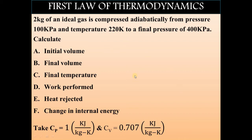Now we will analyze this question. A 2 kg mass of gas is being compressed adiabatically, which means the gas undergoes adiabatic compression. Due to this, the volume of the gas will decrease, the pressure will increase, the temperature will increase, and the quantity of heat will increase. The important point is that the generated heat will not be rejected to the surroundings. In simple words, there will be no heat transfer — the heat rejection value will be 0 kJ and the heat addition value will be 0 kJ.